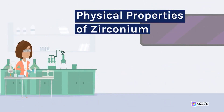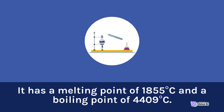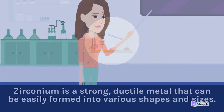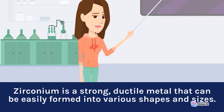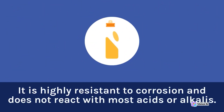Physical Properties of Zirconium. Zirconium is a silvery-white, lustrous metal that is relatively stable in air. It has a melting point of 1855 degrees Celsius and a boiling point of 4409 degrees Celsius. Zirconium is a strong, ductile metal that can be easily formed into various shapes and sizes. It is highly resistant to corrosion and does not react with most acids or alkalis.